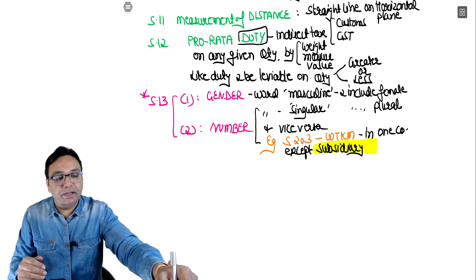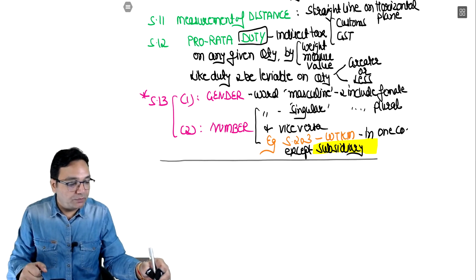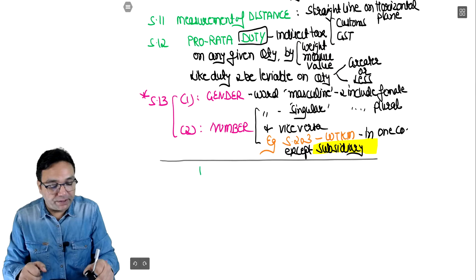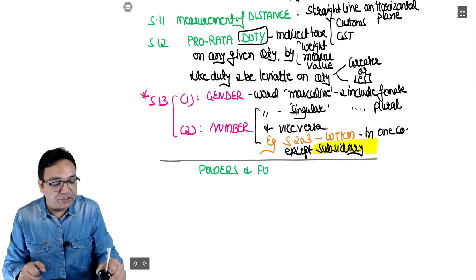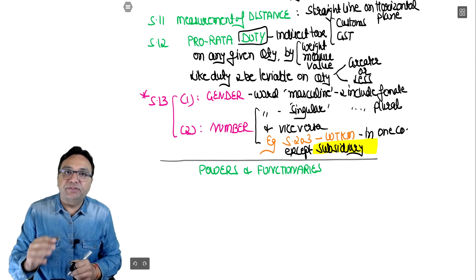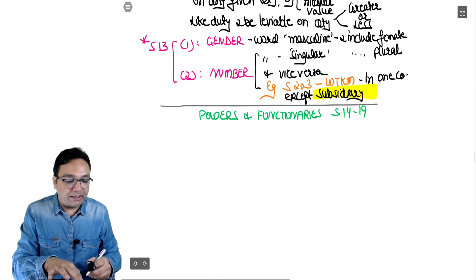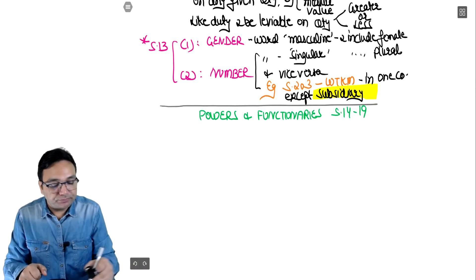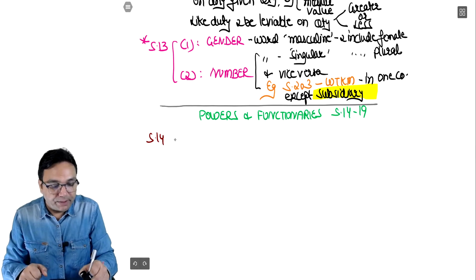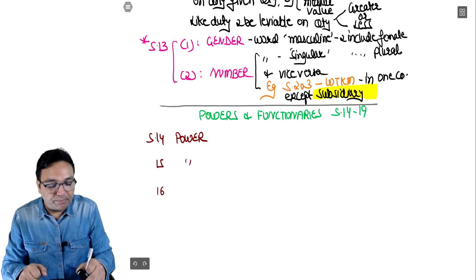Here the question on rules of construction ends. The next question covers sections 14 to 19 - powers and functionaries. Functionaries means those who exercise power - an officer on a post. Both powers and functionaries have 3 sections each. Coming to power: section 14, 15, and 16 are on power.